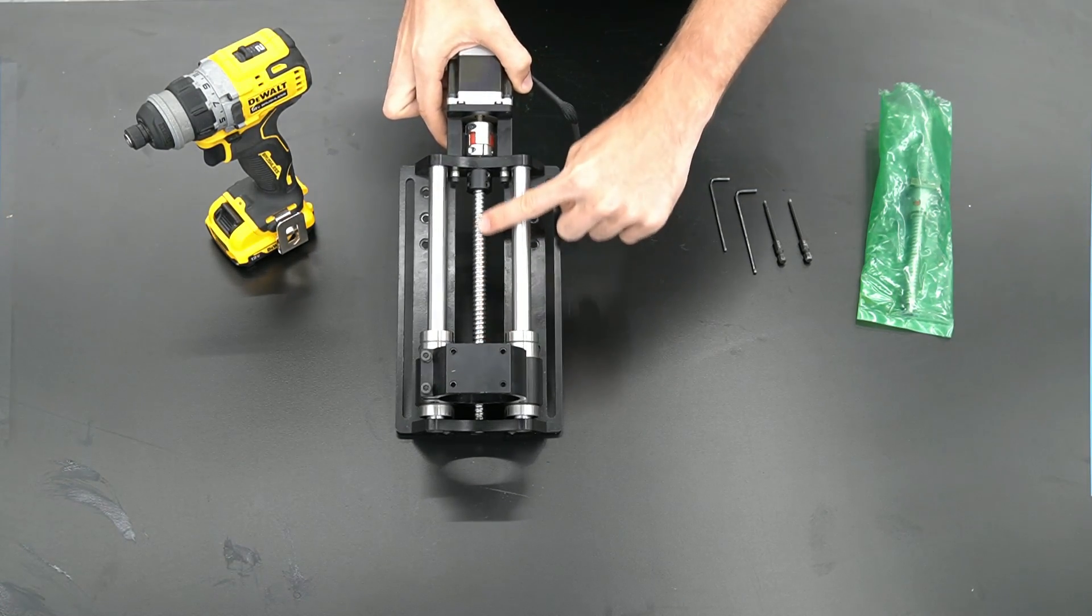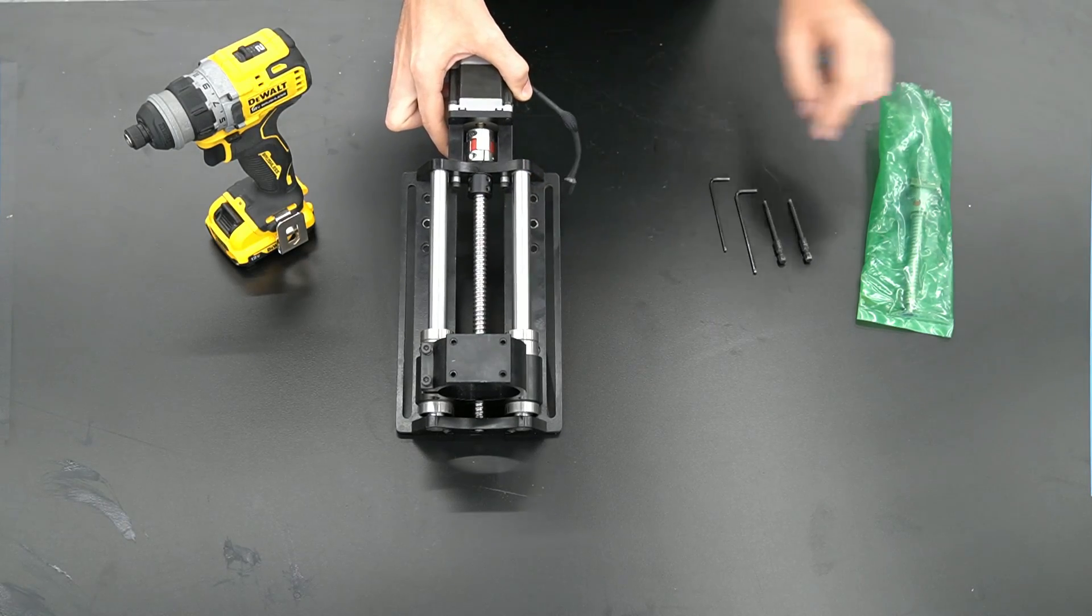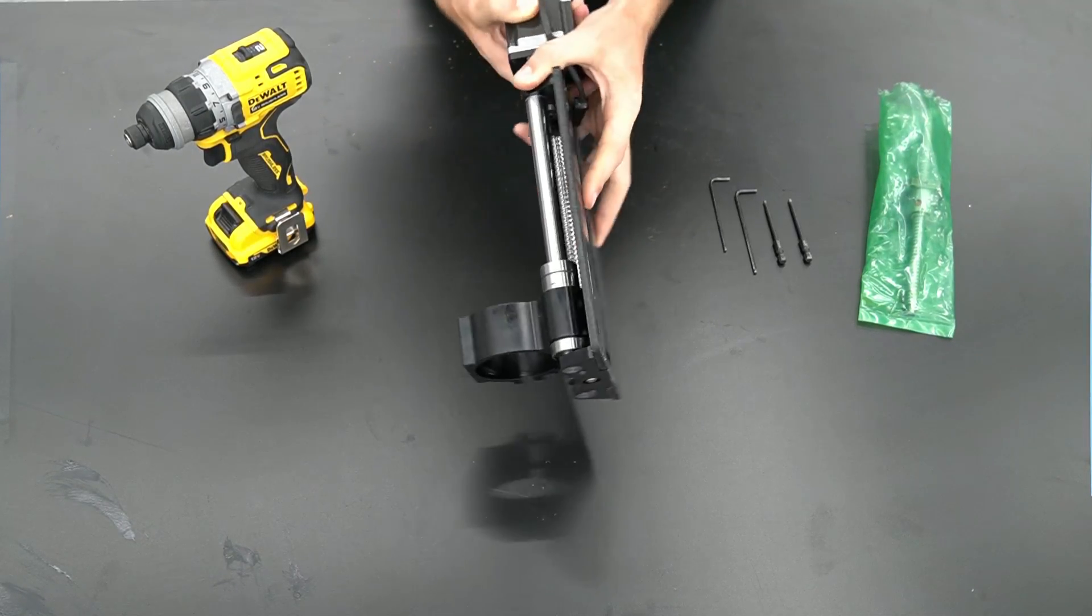In this video I'll be showing you how to replace the Z slider ball nut and ball screw on the Onefinity CNC. Let's get started.